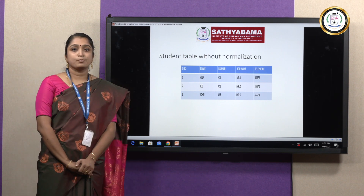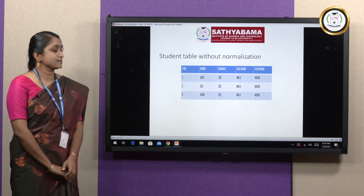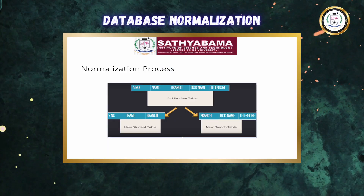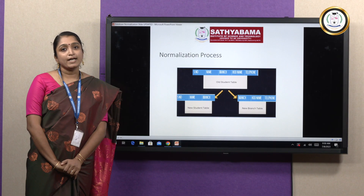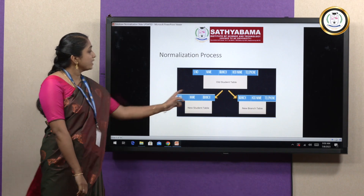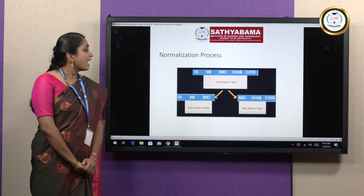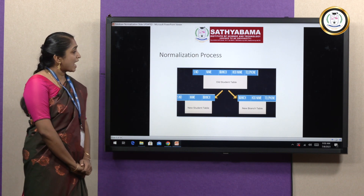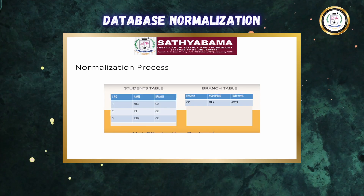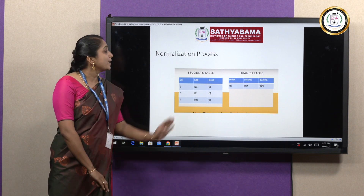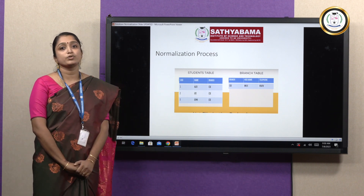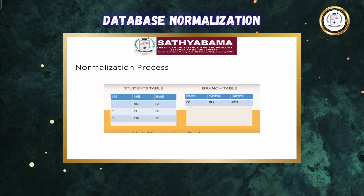In order to avoid these problems, we use the normalization process. Here is a pictorial representation of the normalization process. In normalization, we divide the table into smaller tables. The student table has been divided into two: a new student table with columns serial number, name, and branch, and a new branch table with columns branch, HOD name, and telephone. In the student table, there can be as many rows as there are students, but in the branch table, we just need a single row to represent the branch information.